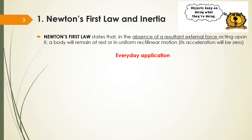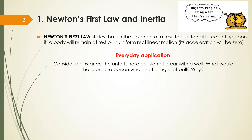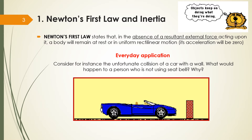Let's do some examples — everyday applications. Consider the unfortunate collision of a car with a wall. What would happen to a person who is not using a seatbelt? Let's say you are in a car and you hit a wall and you don't have your seatbelt. You would probably go out of the car or get seriously injured. Why? Because your body was moving in that car. When the car suddenly stops, your body tends to keep the movement, so you go away from the car with the same velocity as the car was moving before.